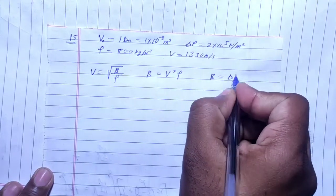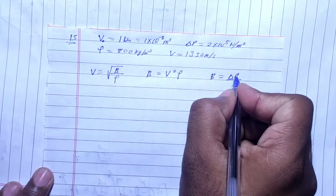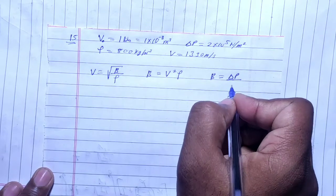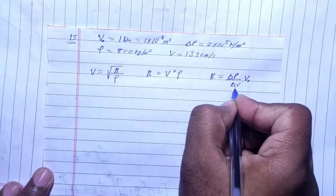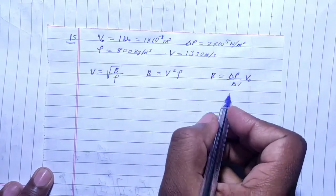Now, bulk modulus is volumetric stress upon volumetric strain. Volumetric strain is ΔV/V, which is change in volume upon original volume. So here, if we put the value of bulk modulus, we get change in pressure...